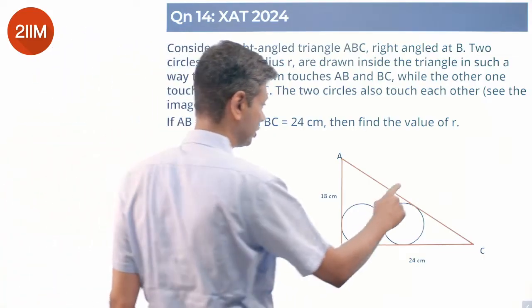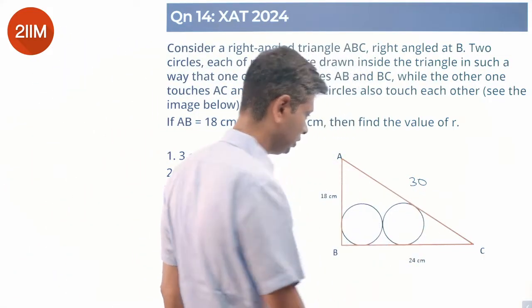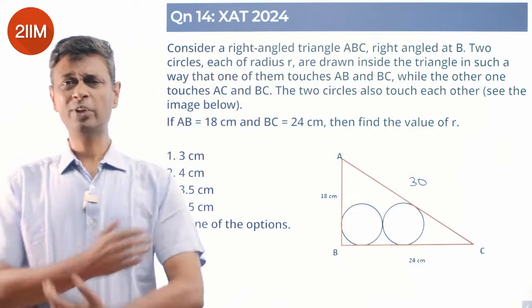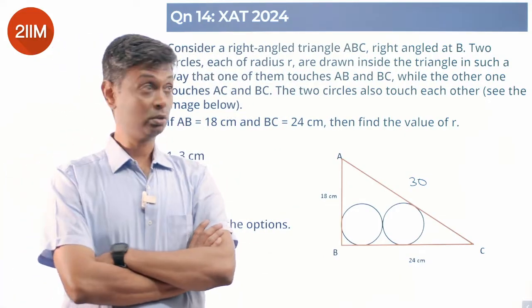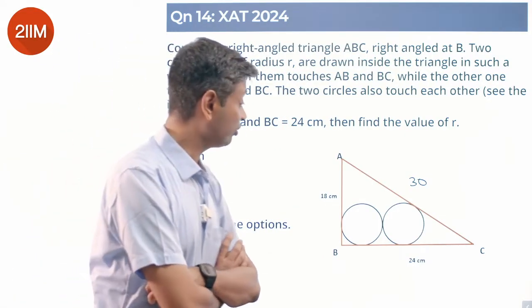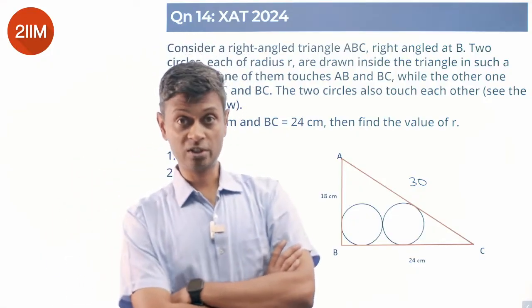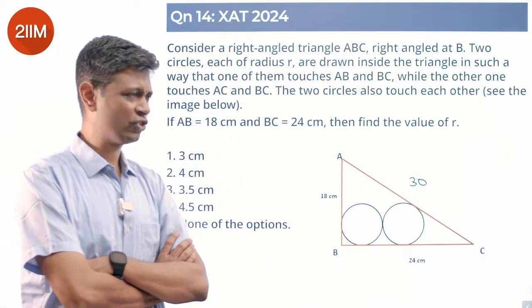AB is 18, BC is 24, so the hypotenuse is 30. I know the formula for incircle radius: (A + B − H) / 2, but this is not the incircle. This circle is sitting next to the incircle — it's probably smaller than the incircle.